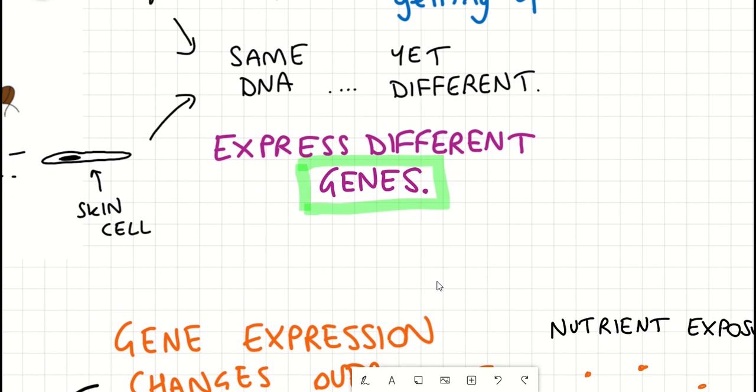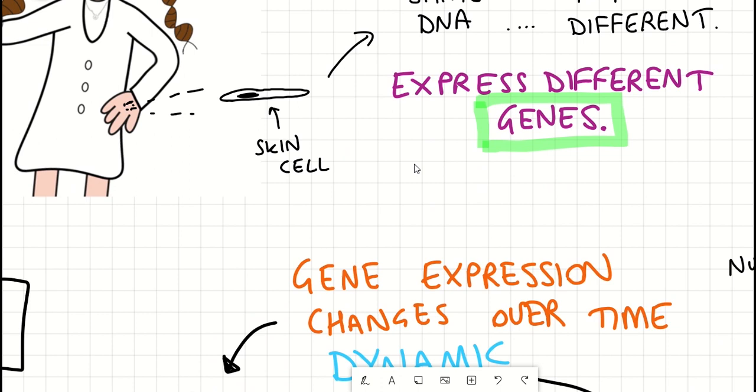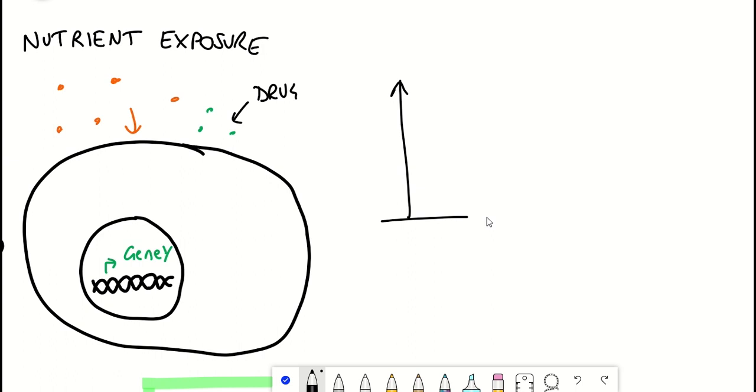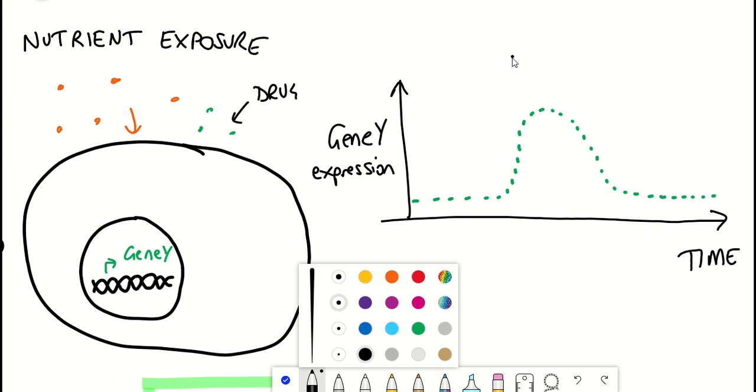Now don't get me wrong, this is still really interesting and it can be used to distinguish different types of cells because different cells express different genes. However, it lacks that temporal resolution that we might desire if we're trying to look at a very rapid response to an extracellular signal. For example, in response to a signal, there might be a pulse of expression of a particular gene that then dies down once that signal has gone away.